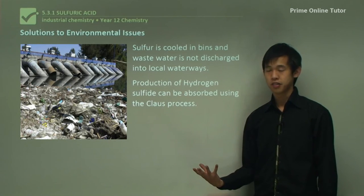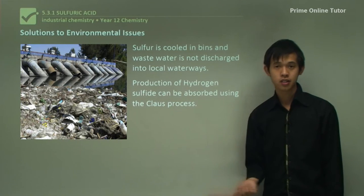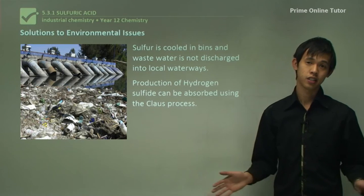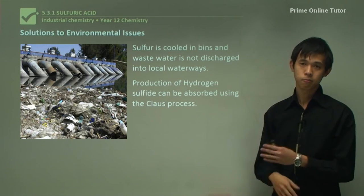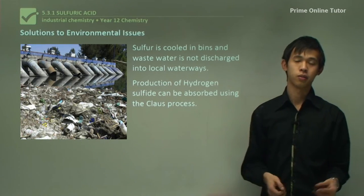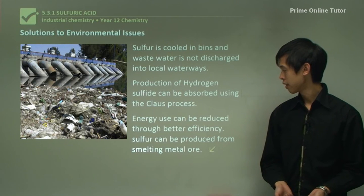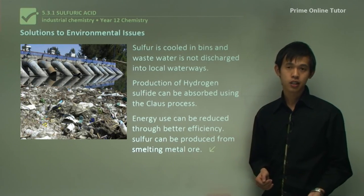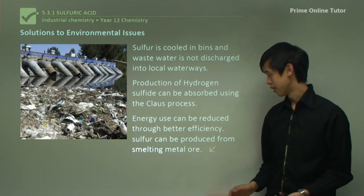The production of hydrogen sulfide can be absorbed using the Claus process — a chemical process beyond the scope of this course, but we should know it can absorb hydrogen sulfide, so the odor issue is not a problem. Energy use can also be reduced by using better equipment such as more efficient pumping devices and heating elements.